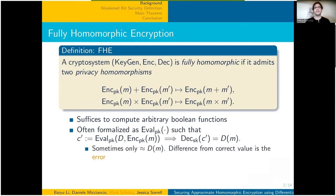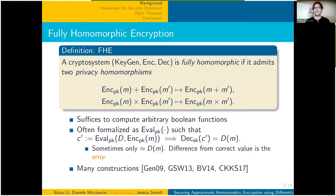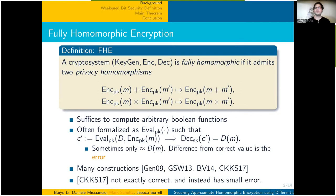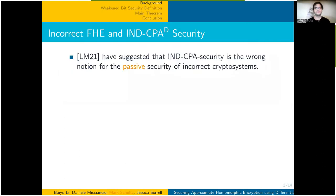Sometimes it only decrypts to a nearby value, though. The difference from the correct value is known as the error. There are many constructions of FHE in the literature. CKKS in particular is not correct, and instead has small error. This scheme will be of central importance to our work.